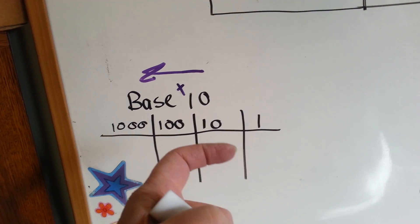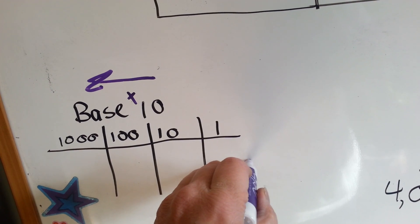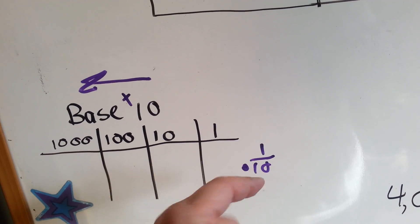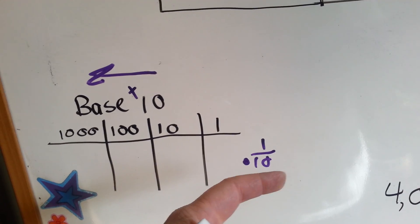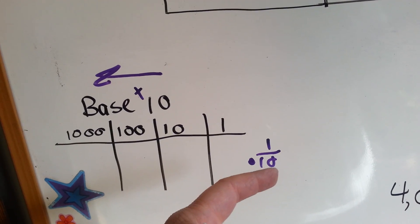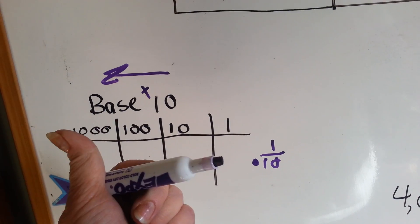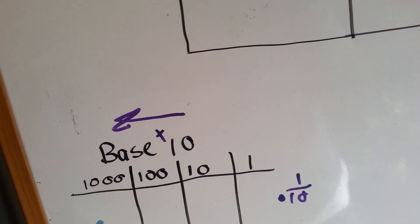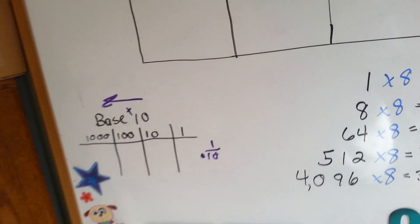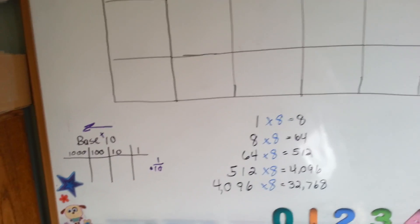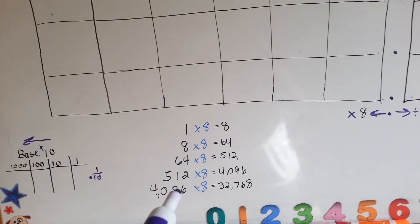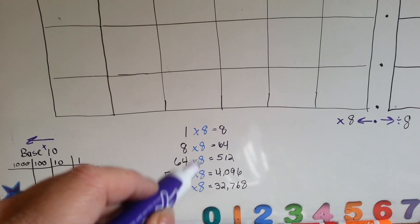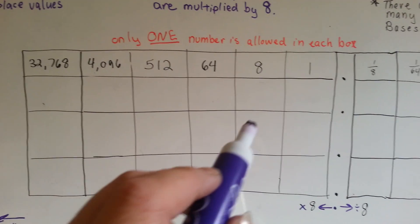Going to the right, if we had a decimal point, it would be one-tenth. So we'd be dividing by ten, multiplying by ten, dividing by ten. Well, in base eight, we do the same thing except we use eights. We multiply by eight.